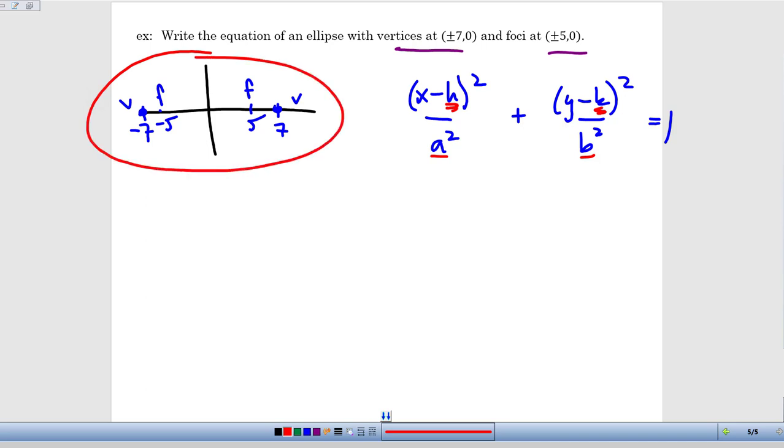Hopefully it's obvious that the center of this ellipse has to be at the origin because it's at the center, it's going to be halfway in between the vertices and halfway in between the foci. So our center h, k is 0, 0. That means in our equation as we start to fill in this information, it's just going to be x squared in the numerator and y squared in the numerator. We've got that much filled in, the h and k are 0 and 0.